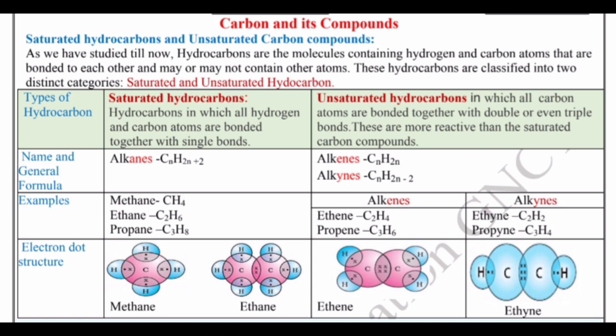Alkynes contain a triple bond, and their general formula is CnH2n−2. Alkanes have the general formula CnH2n+2 — examples include methane, ethane, and propane. Alkenes have the general formula CnH2n — examples include ethene and propene. Alkynes have the formula CnH2n−2 — examples include ethyne and propyne.